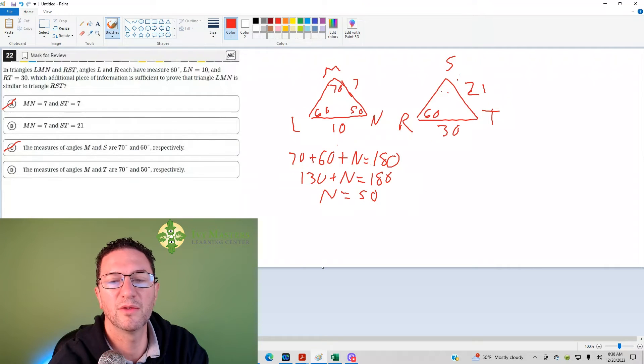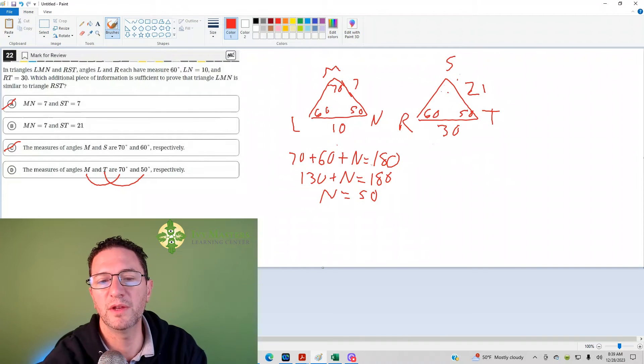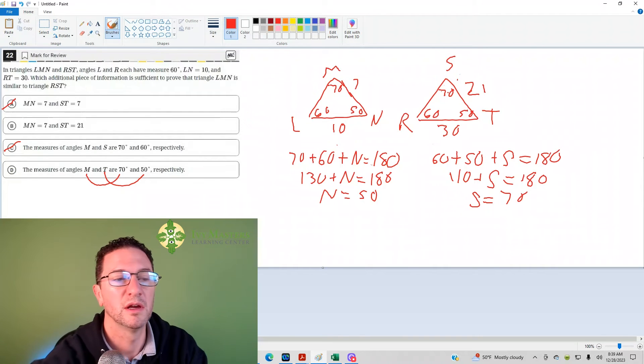And then if angle T is 50 - and that's, by the way, what it means when it says respectively. M is 70, T is 50. That's 50. Not that you'd have to do the same thing, because that's the edge of 180. So if that's 60, 70, 50, it's got to be 60, 70, 50. But if you did 60 plus 50 plus angle S equals 180 degrees, then you'd have 110 plus angle S equals 180 degrees. You can subtract that 110 from both sides. You get that angle S does, in fact, equal 70 degrees.